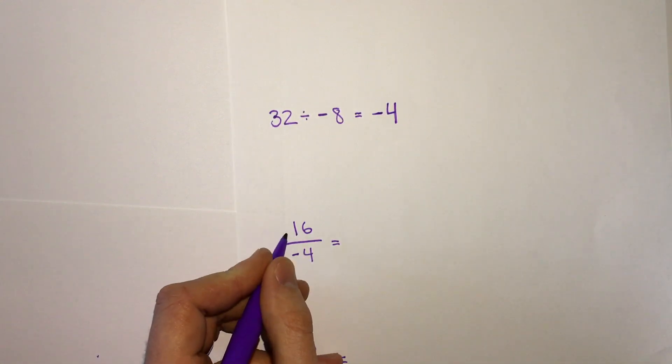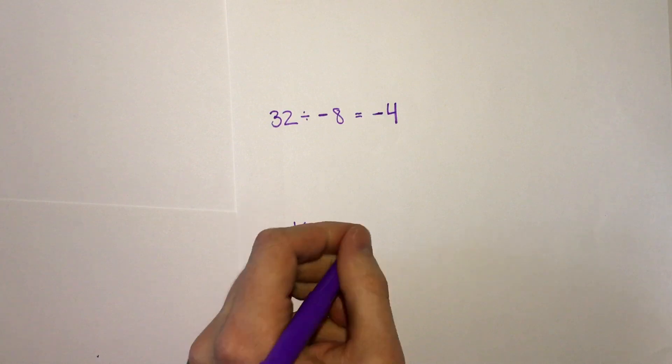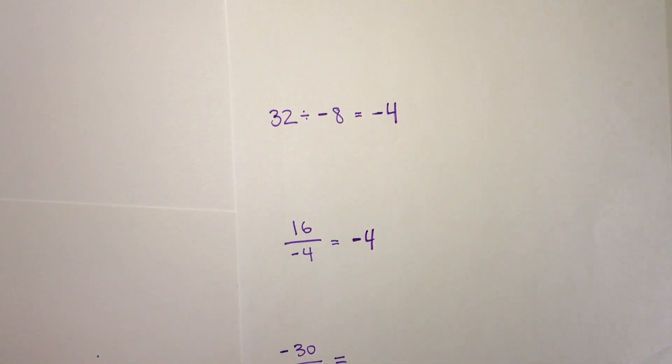The same thing, we look at our signs. A positive and a negative, our answer will be negative. 16 divided by 4 is 4, our answer is negative 4.